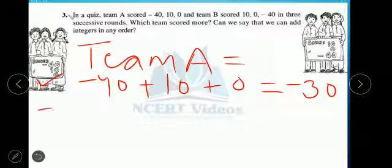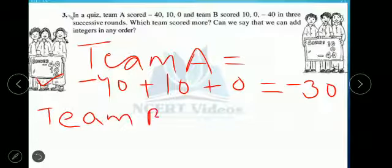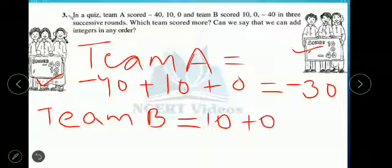Now team B, let's check. Team B is 10 plus 0 plus minus 40.